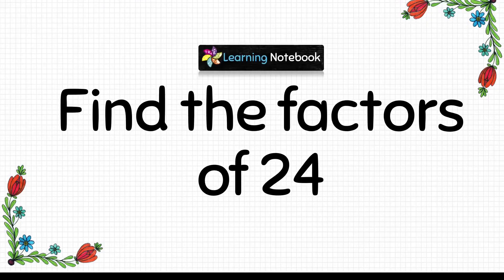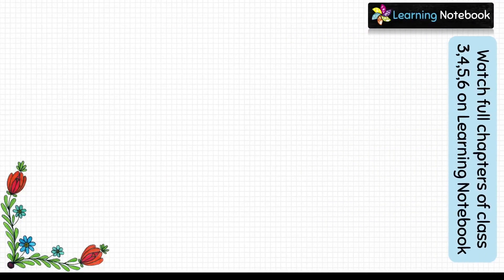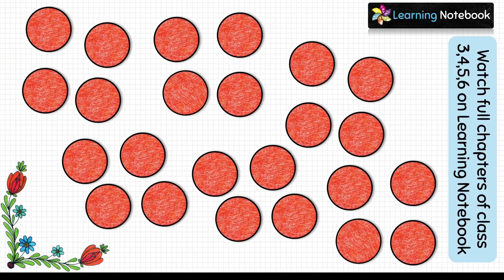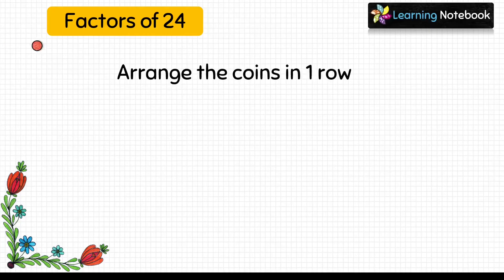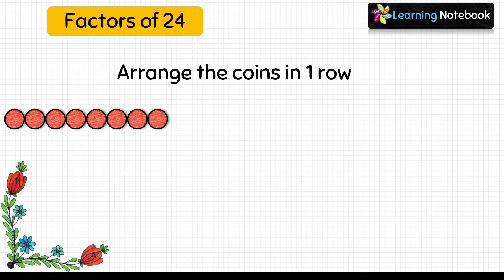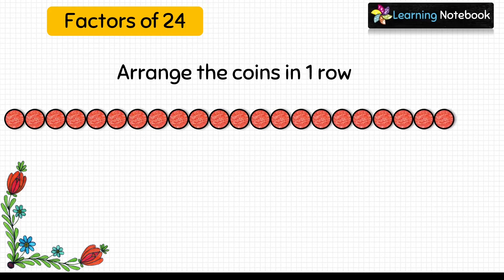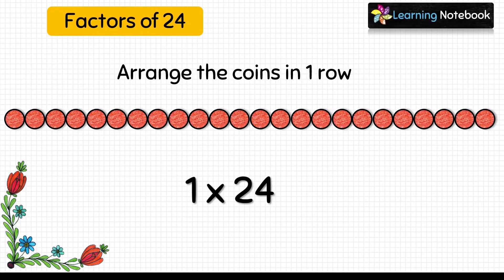Now let's find factors of 24. To find factors of 24, let's take 24 coins and again we will try to arrange these coins in rows in such a way that each row has the same number of coins. First, let's arrange these 24 coins in one row. So we have arranged all the 24 coins in one row, and this arrangement can be expressed as 1 into 24.